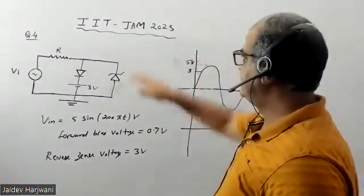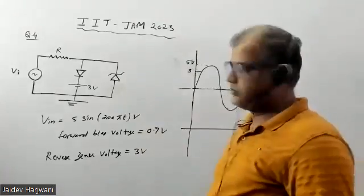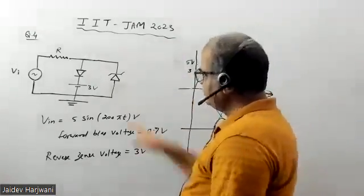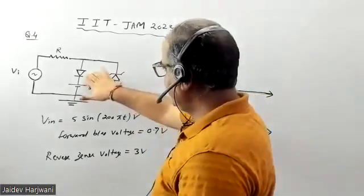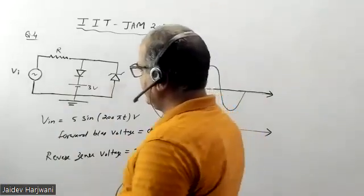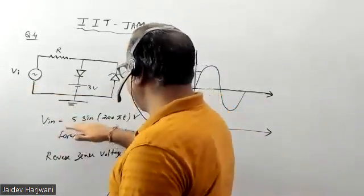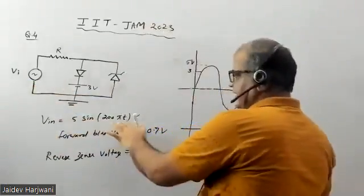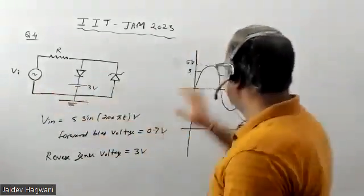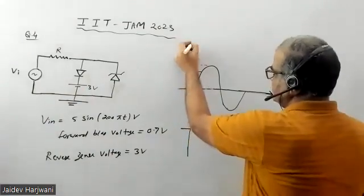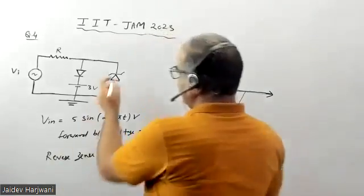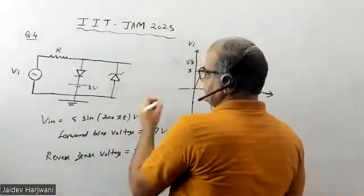Hello students, let us see question number four from IIT JAM 2023. In this question, they have given a Zener diode and a normal diode connected in parallel. The input value is given as V = 5 sin(200πt) volts, so the peak voltage of this input wave is five volts. They are asking: what is the waveform of the output voltage?